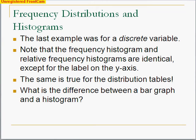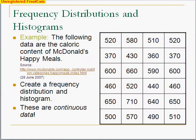Alright, so moving on here, let's look at another example. The following data are the caloric content of McDonald's Happy Meals. So we looked at 24 different Happy Meals, and we got the caloric content of those Happy Meals. So we want to create a frequency distribution histogram of this. I want to take a quick stop right here. These are continuous data.